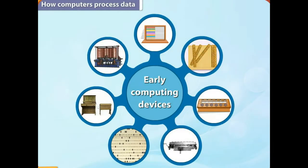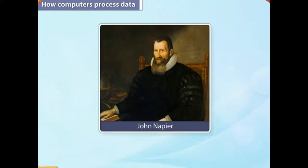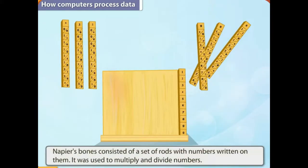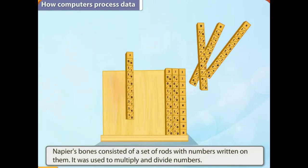Napier's bones: Then in 1617, John Napier, a Scottish mathematician, invented a calculating instrument called Napier's bones. Napier's bones consisted of a set of rods with numbers written on them. It was used to multiply and divide numbers.